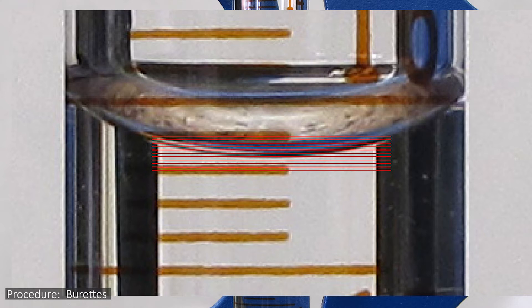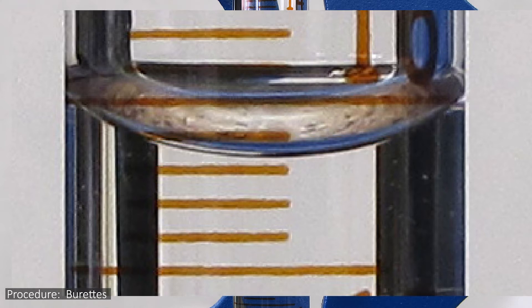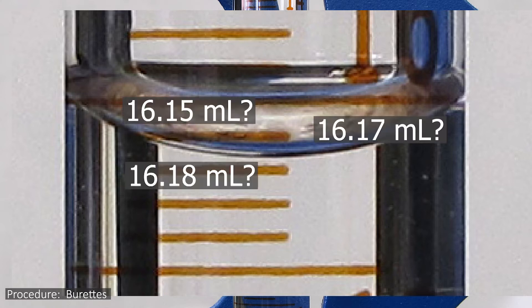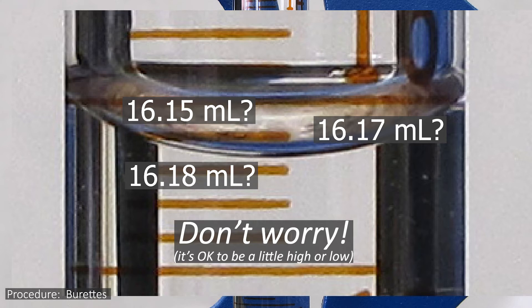Of course, when you go to do this yourself, you won't have any thin lines to help you out like the ones in this example, which does make it a little harder to figure out what that last digit is. Just estimate it as best you can, and don't worry too much whether your estimate is a little high or a little low. With some practice, you'll get good at this in no time.